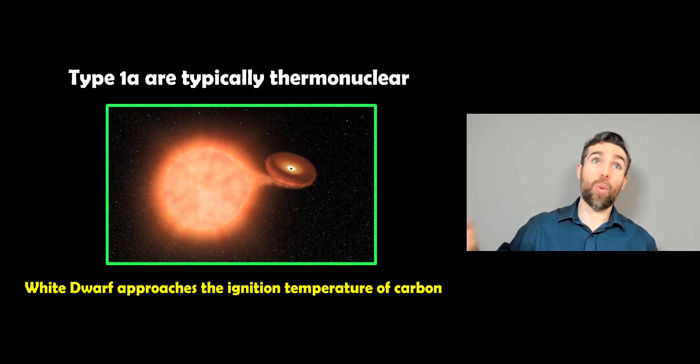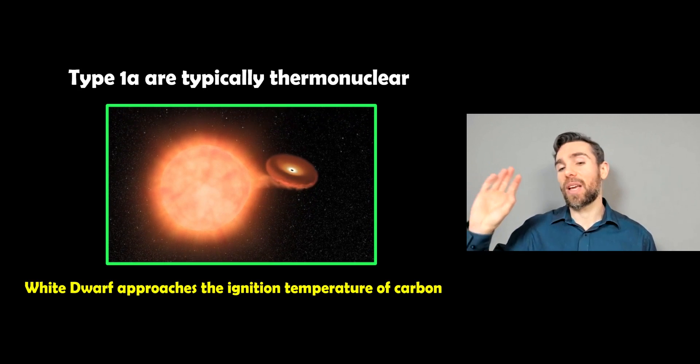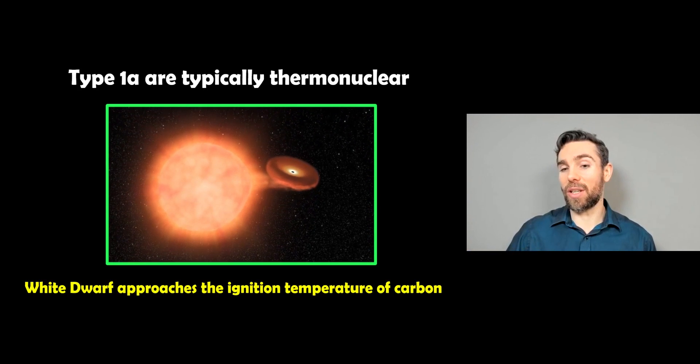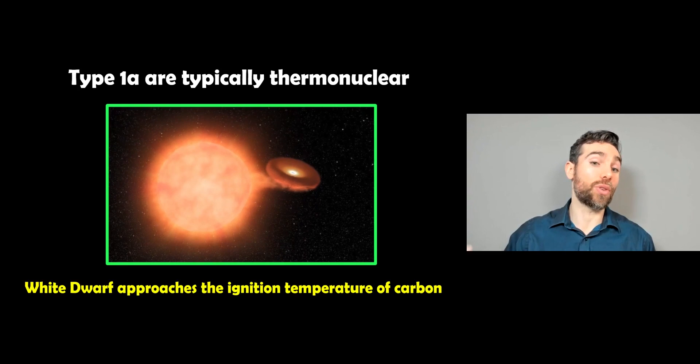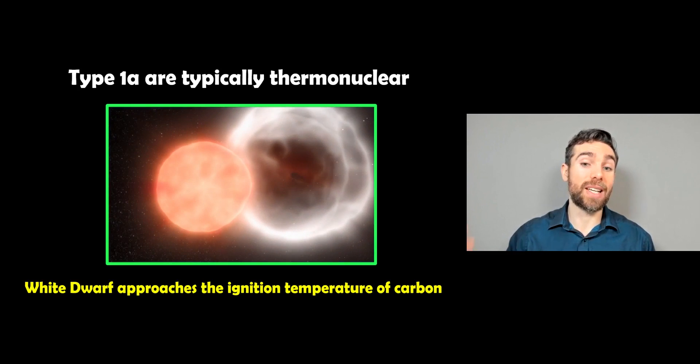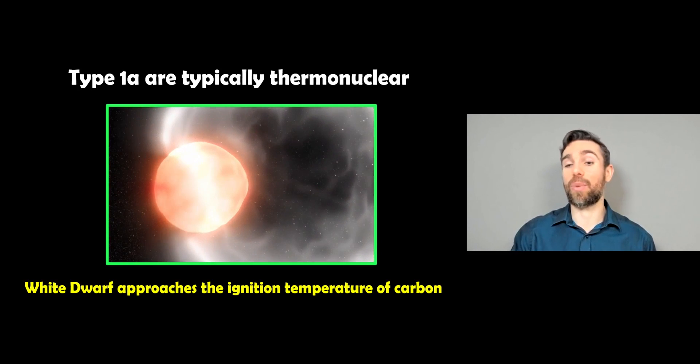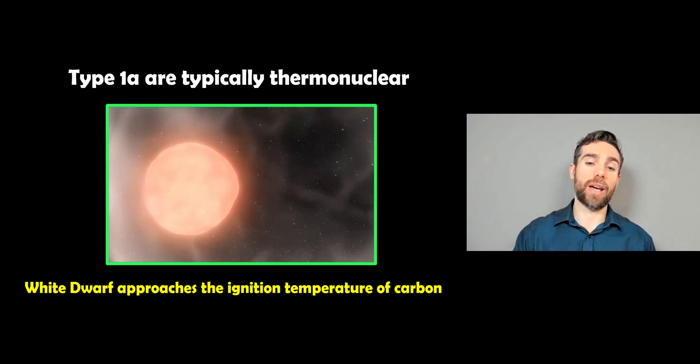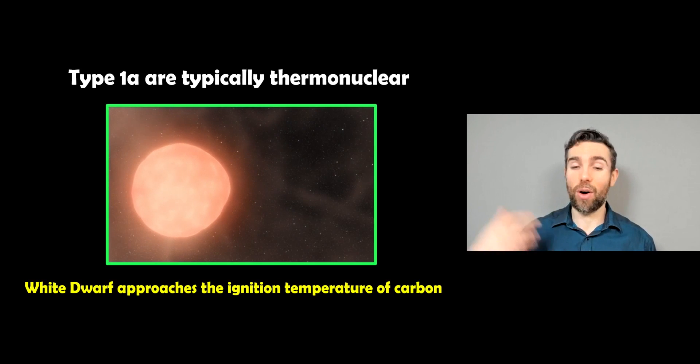So the white dwarf will reach about 1.4 solar masses, it heats up as it's doing so because it gets more massive. So the gravitational forces are trying to collapse that which heats the star up, it then hits that temperature where the carbon then ignites essentially and the whole thing is destroyed.